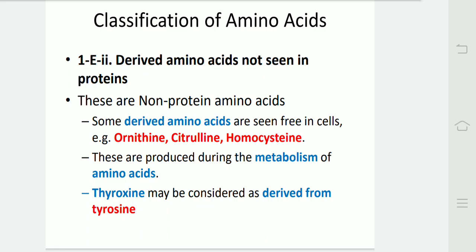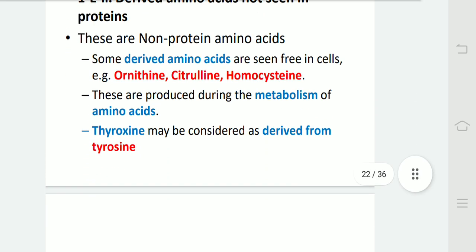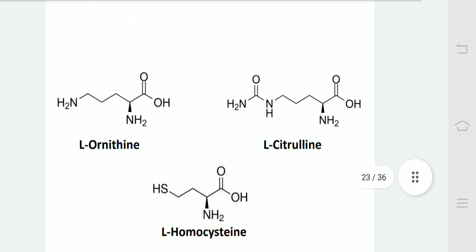Derived amino acids not seen in proteins, i.e. non-protein amino acids: some derived amino acids are seen free in cells. For example, ornithine, citrulline and homocysteine. These are produced during the metabolism of amino acids. Thyroxine may be considered as derived from tyrosine. In the diagram, we can see that ornithine, citrulline and homocysteine are free amino acids.